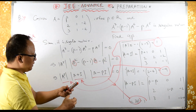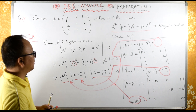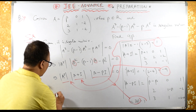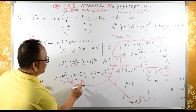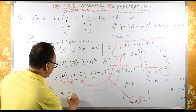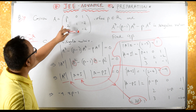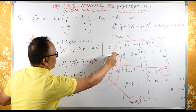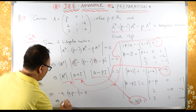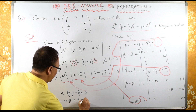Substituting all these values: determinant of A raised to 5 equals 1 raised to 5 which is 1. So we have 1 times minus 4 times (3 beta minus 1) equals zero. Since it is a singular matrix, we set this equal to zero. Expanding: minus 12 beta plus 4 equals zero.